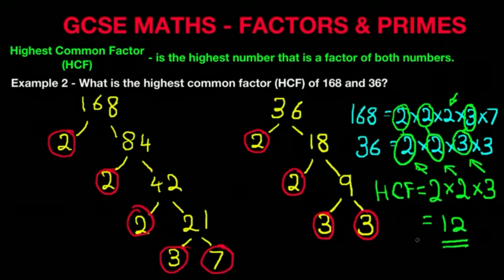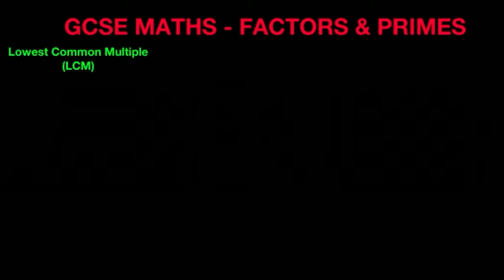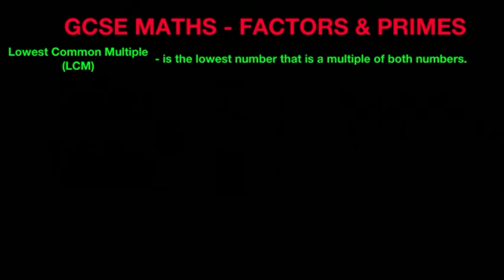So it's very simple to work out the highest common factor — just make sure you get the workings out absolutely correct. Now we will move on to the lowest common multiple, abbreviated LCM. The lowest common multiple of two numbers is the lowest number that is a multiple of both numbers.